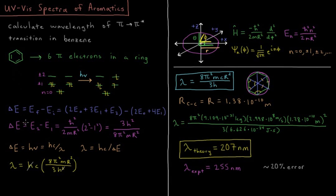So ΔE equals E₂ minus E₁, which is ℏ² over 2mr² times n₂² minus n₁². So that's 2² minus 1². So the energy difference between these two states here is going to be 3h² over 8π²mr², where I've substituted in the fact that ℏ is h over 2π. So ℏ² over 2 is equal to h² over 8π². And then the 3 comes from 2² minus 1².